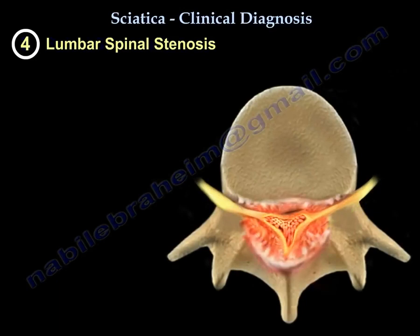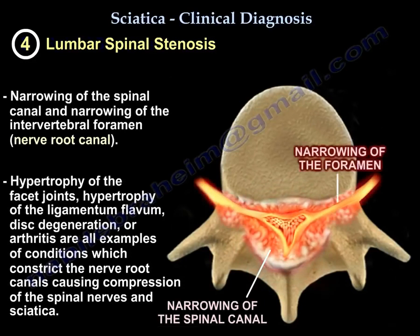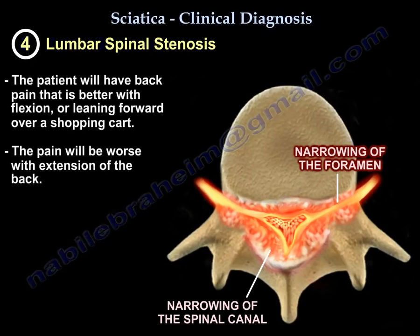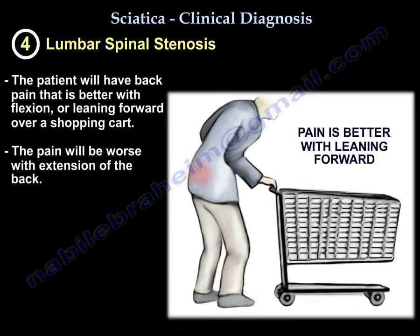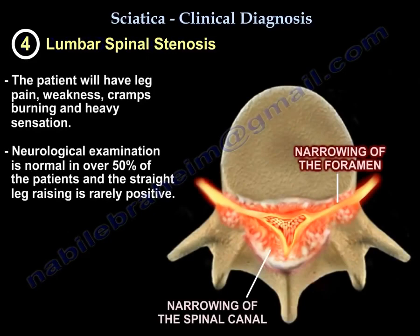Number four is spinal stenosis — narrowing of the spinal canal and foramen from enlarged hypertrophy of the facet joints, hypertrophy of the ligamentum flavum, disc degeneration, and spinal arthritis. All of this causes pressure on the nerve roots and sciatica. The patient will have back pain that is better with flexion or leaning forward over a shopping cart, and worse with extension. There will also be leg pain, weakness, cramps, burning, and a heavy sensation. Neurological exam is normal in over 50 percent of patients, and the straight leg raise is rarely positive.